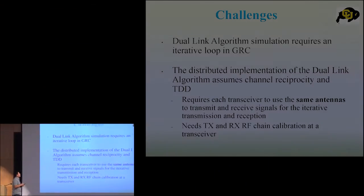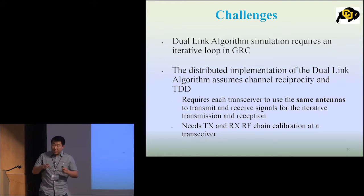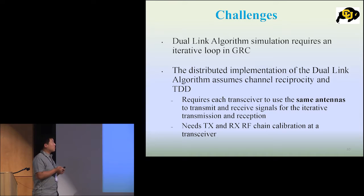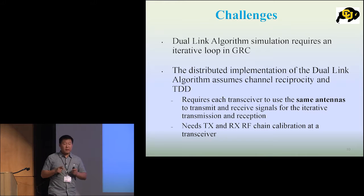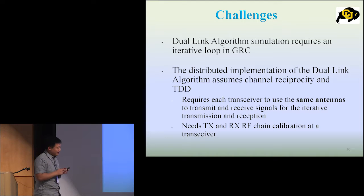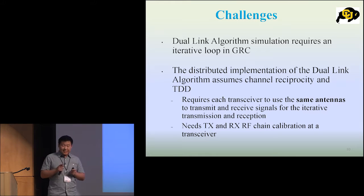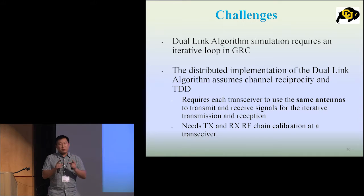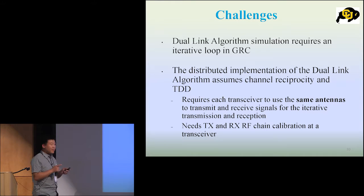GNU Radio Companion doesn't allow loops inside, but for our algorithm we have to use loops. So we try to create some virtual loops to enable iterative transmission. When we go to over-the-air transmission, we have the assumption that the channel has the reciprocity property, which means the forward and the reverse links are exactly the same. So we have to use exactly the same antennas to transmit and receive, and we also have to do some RF chain calibration at the transceiver since the RF chains inside the USRPs are not exactly the same.